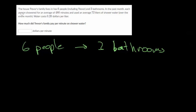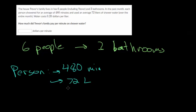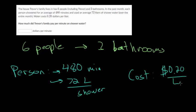In the past month, each person showered for an average of 480 minutes and used an average of 72 liters of shower water. So each person is 480 minutes of shower time and uses 72 liters per shower. And we know the cost of water, it's 20 cents per liter, so $0.20 per liter.